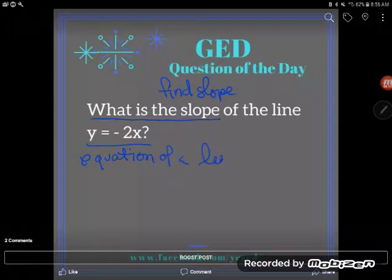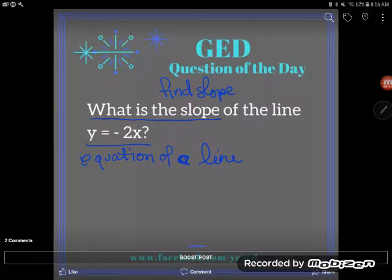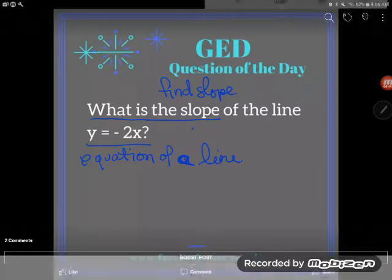One of the big tip-offs here that this is the equation of a line is that you can see it's actually written in slope-intercept form of a line. You might say Kate, I have no idea what you're talking about. What is the slope-intercept form of a line?